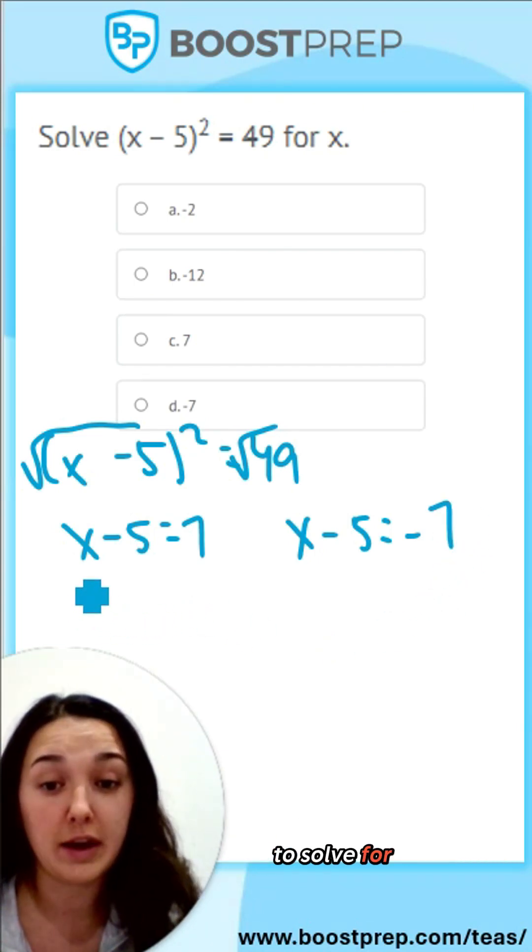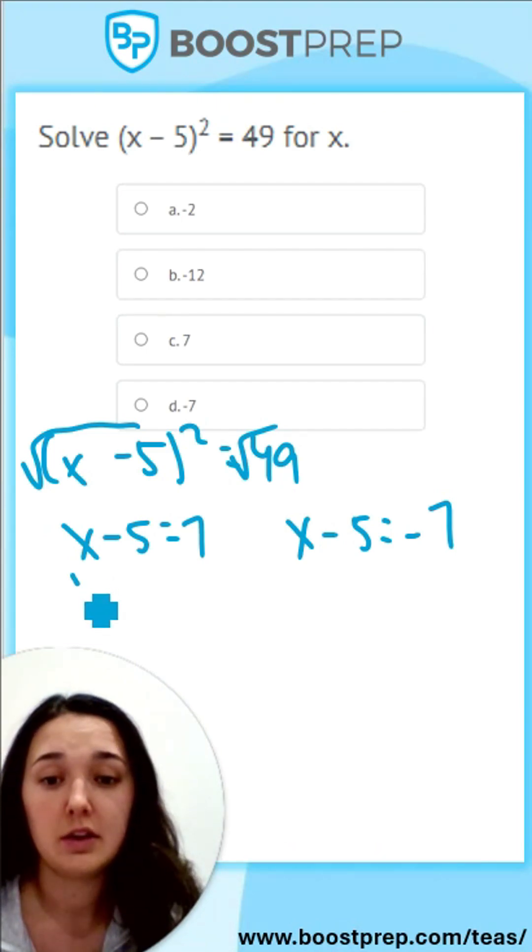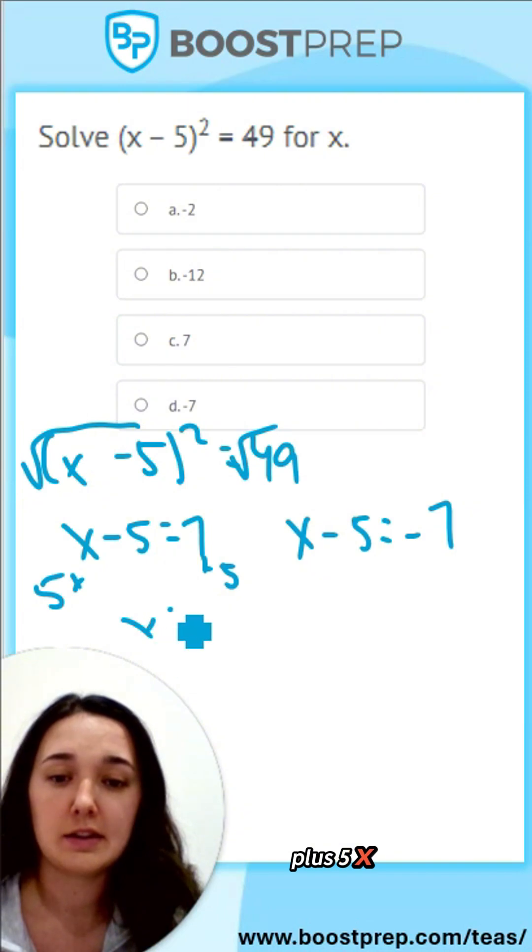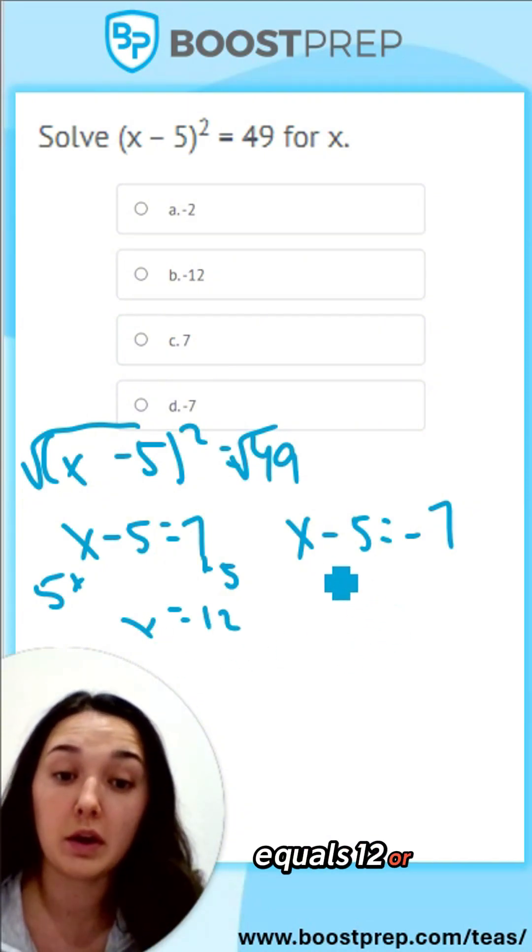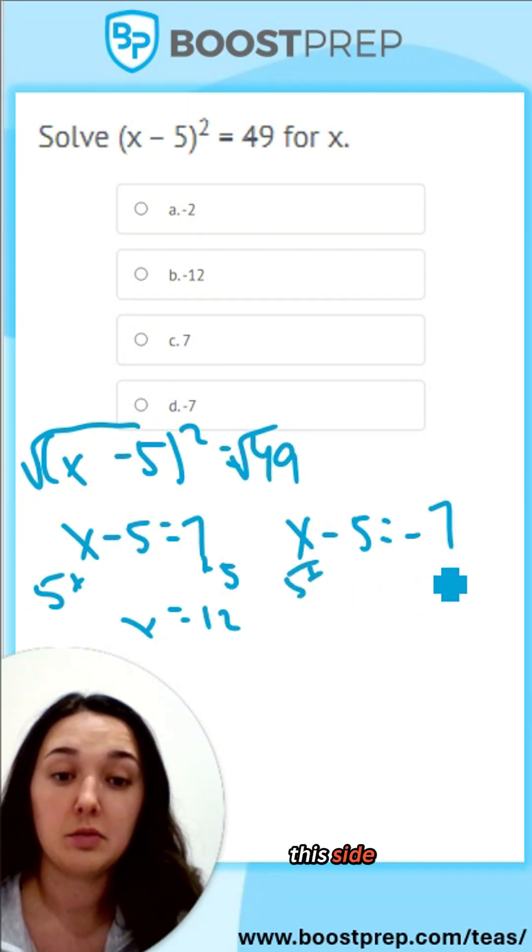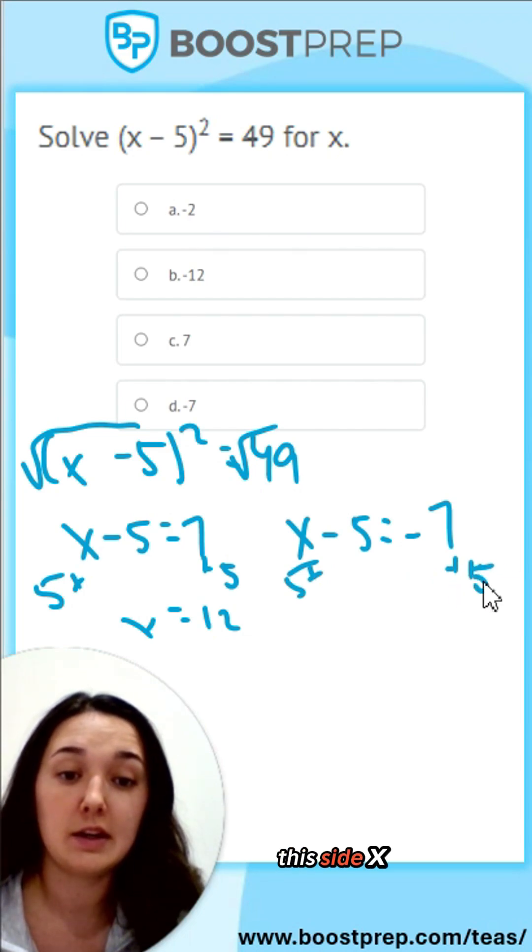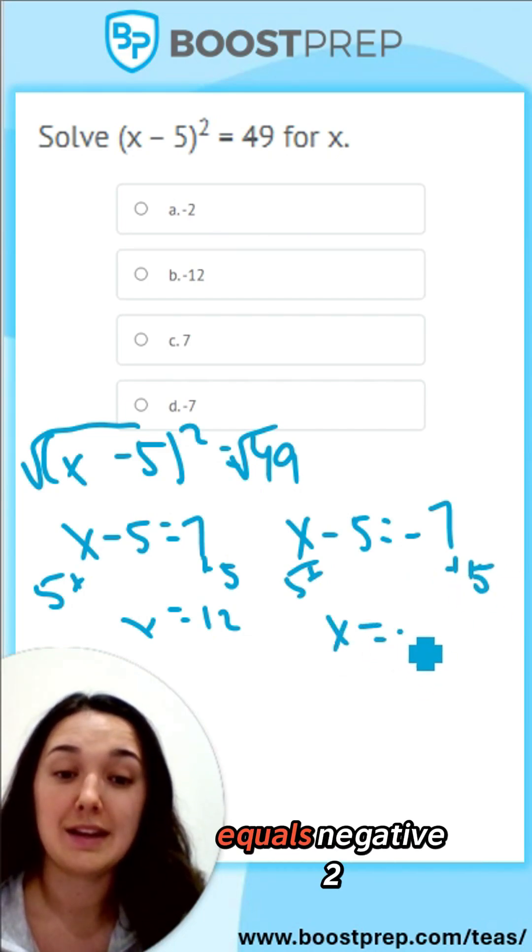You then want to solve for x for both of the equations. So you do plus 5 to get x by itself, plus 5, x equals 12, or plus 5 on this side, plus 5 on this side, x equals negative 2.